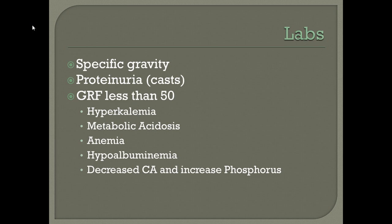Lab findings in CGN include low specific gravity, as patients are not concentrating their urine. Large proteins appear in the urine as casts. Patients with CGN often have a GFR of less than 50, accompanied by hyperkalemia and metabolic acidosis, since the kidneys are not producing the base. Anemia occurs because the kidneys are not making erythropoietin to manufacture red blood cells. Hypoalbuminemia results from albumin being lost into the urine. Calcium is decreased and phosphorus is increased due to inadequate filtration, as calcium and phosphorus have an inverse relationship.